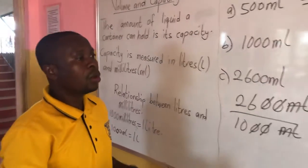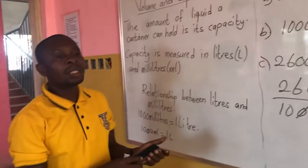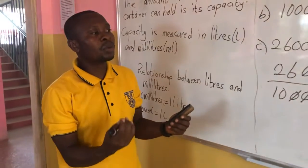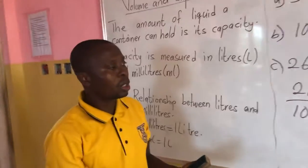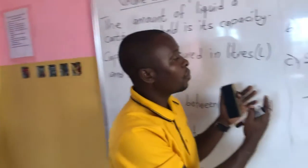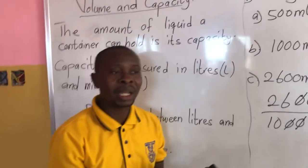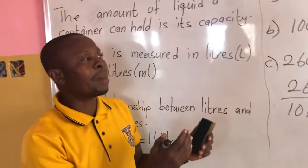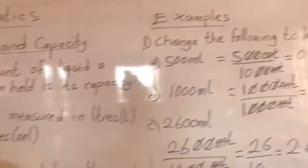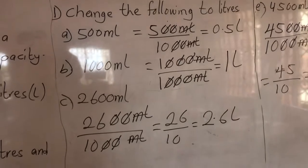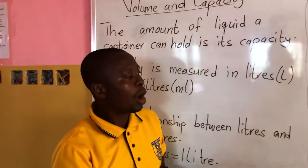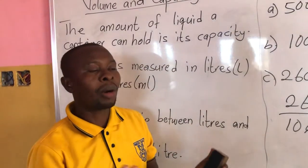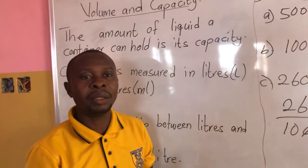So we are saying that capacity is the amount of liquid a container can hold. When changing from milliliters to liters, we always divide by 1000, cancel the zeros, and get our answer. I hope with this I can bring our lesson to an end. Till our next meeting, have a nice day. Bye-bye.